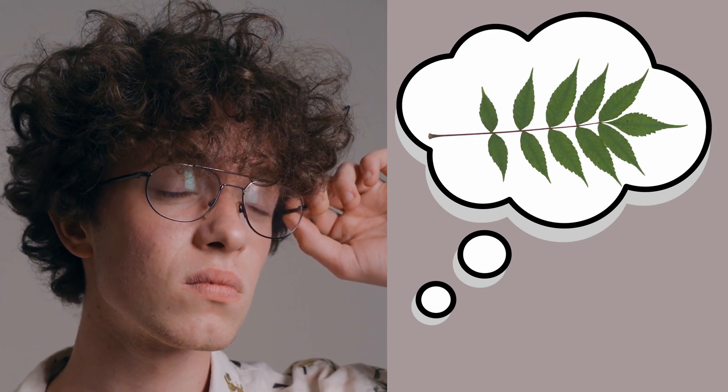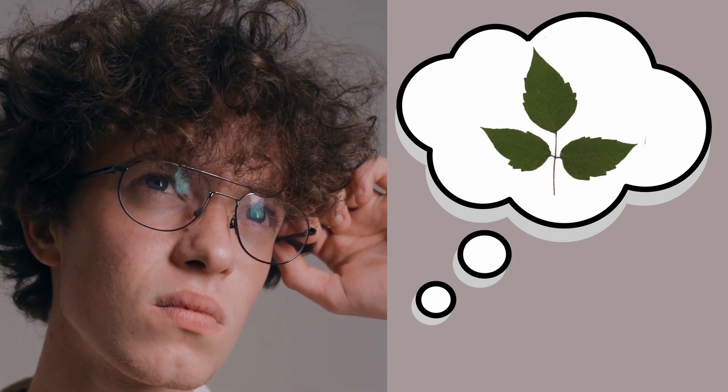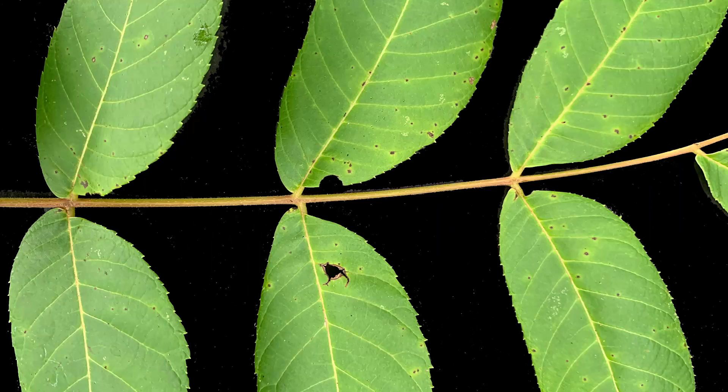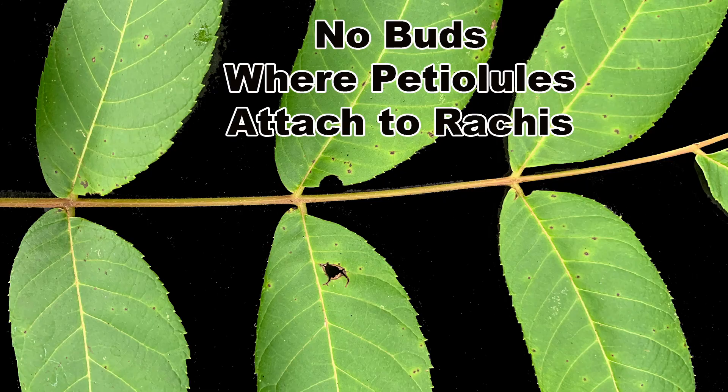The question I'm sure a lot of you are thinking of is: I know what the types of leaves are and their parts, but how do I know whether I'm looking at a leaf or a leaflet on a compound leaf? A leaf, whether simple or compound, will have an axillary bud at the base of the petiole, where the leaf attaches to the stem. If we zoom in on a compound leaf and look at the base of a leaflet's petioleule, we'll see that there is no bud.